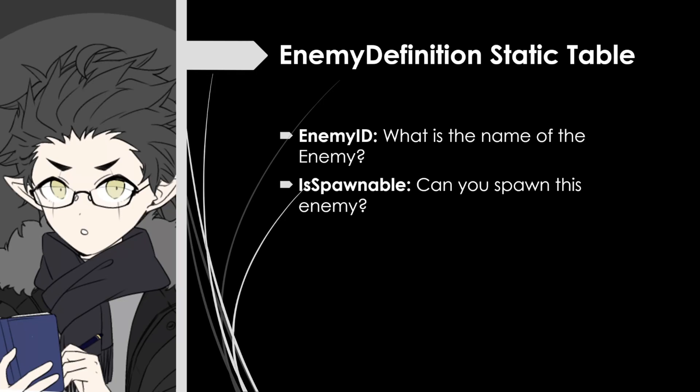Next we'll go over the enemy definition static table. Similar to the item definition static table, this table defines all of the enemies in-game. There's a lot that goes into this table, but for a DOV we only need to focus on two things. The first is the Enemy ID — the name of the enemy in the registry table. The second is Is Spawnable — whether you can spawn this enemy from a DOV. Some enemies listed in the DOV won't actually be able to spawn.